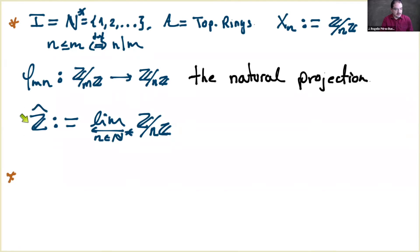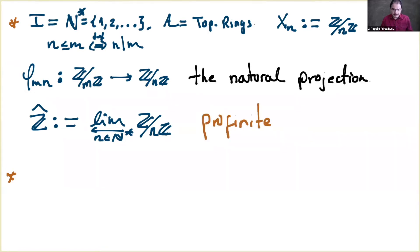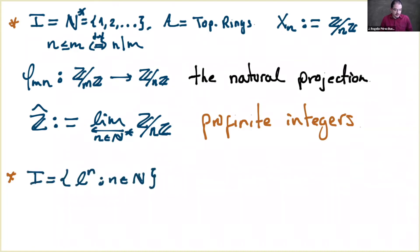This ring is very important and we have a notation for it: ℤ-hat. This is the completion — in the sense that Miriam discussed — and this is a complete ring. It is also called the profinite integers, because this is the profinite completion of the integers.